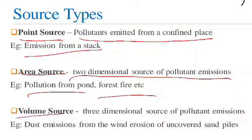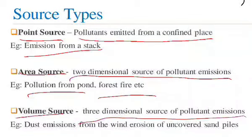The volume source is a three-dimensional source of pollution emissions. In the example of dust storms, the air pollution spreads three-dimensionally in the x, y, and z directions.